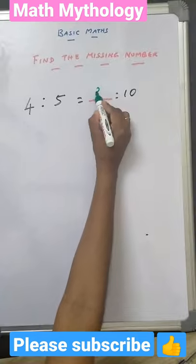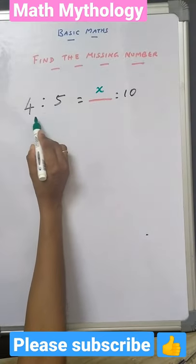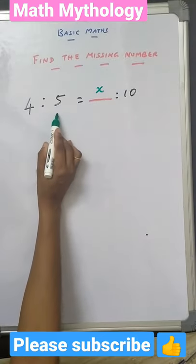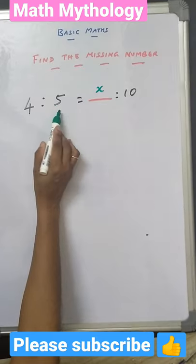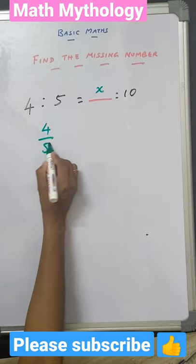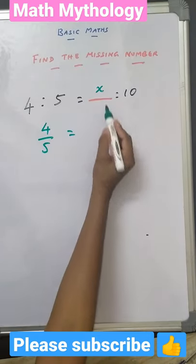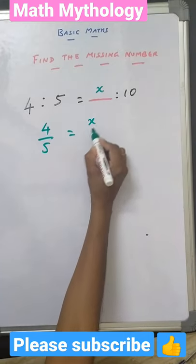So this unknown number we keep as x. Then we write this ratio in fraction form. The fraction form of 4 is to 5 is 4 by 5, which is equal to the fraction form of x is to 10, which is x by 10.